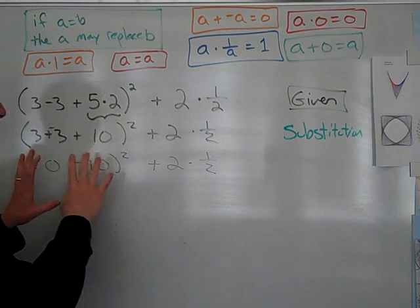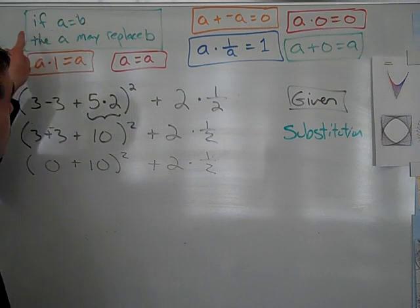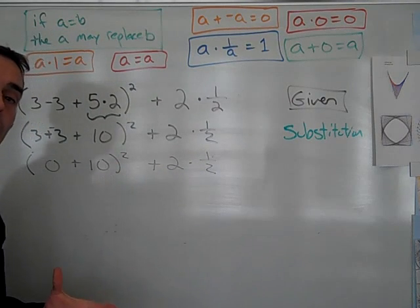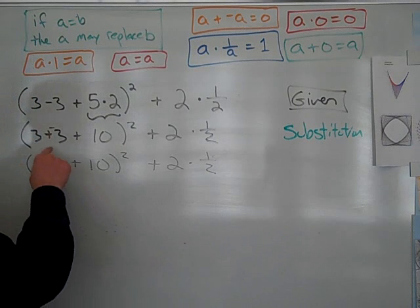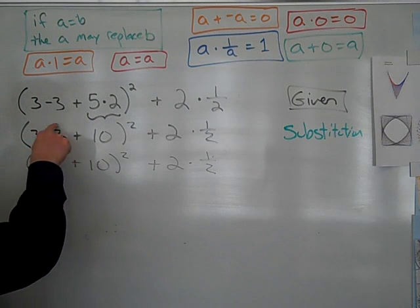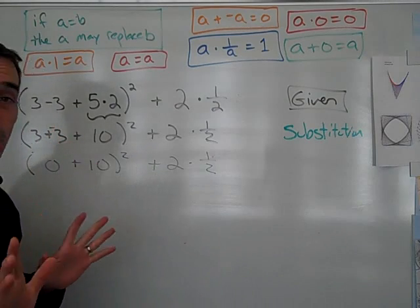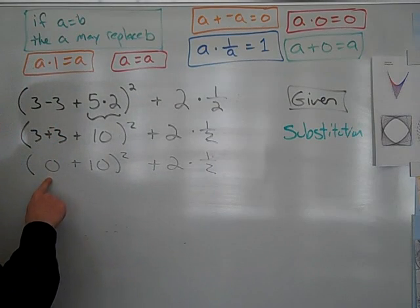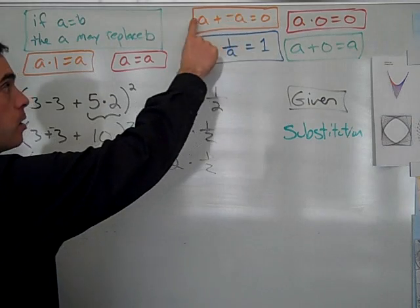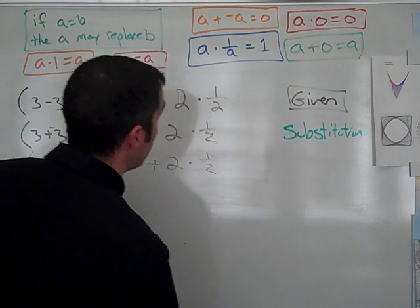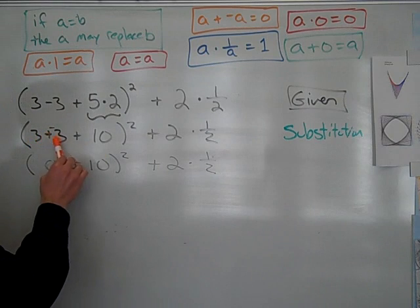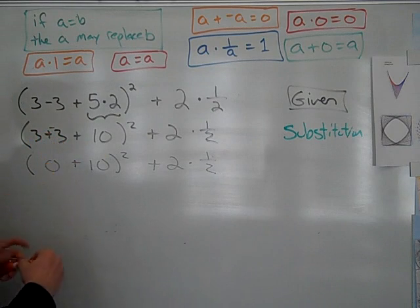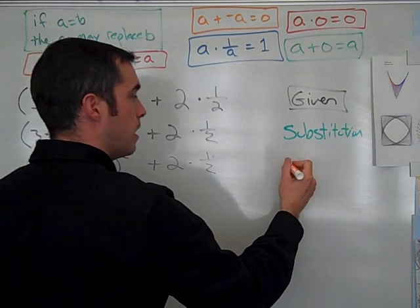So this may look like substitution. If A equals B, then A may replace B. However, we have a stronger property of equality that more closely resembles this. A number plus its opposite equals 0. That looks like this property right here, and that is called the additive inverse property. And I'll say it correctly now. A number plus its additive inverse gets us to 0. So that is the additive inverse.